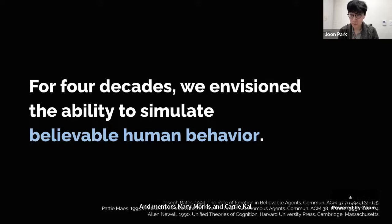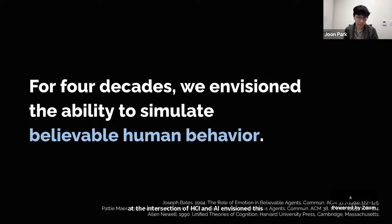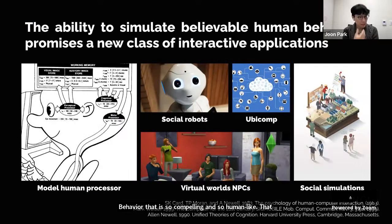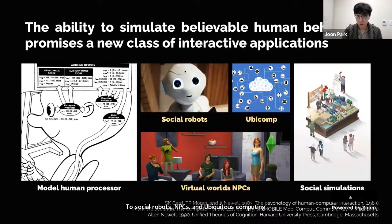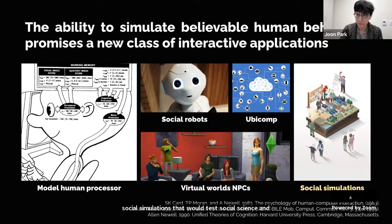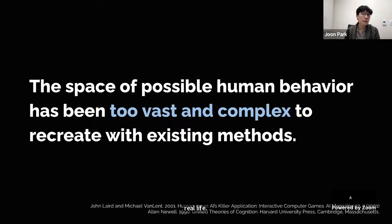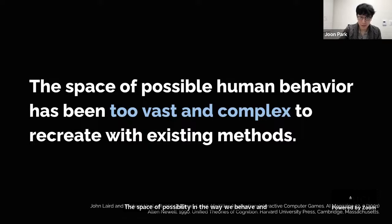For over four decades now, from the time of cognitive architecture and symbolic systems to statistical machine learning, we the researchers and practitioners at the intersection of HCI and AI envisioned the ability to simulate believable human behavior — behavior so compelling and human-like that it provides an illusion of life. This ability promised a new class of interactive applications, from model human processors for usability testing to social robots, NPCs, and social simulations. But we faced fundamental challenges: the space of possibility in the way we behave was much too vast and complex to navigate with existing methods.